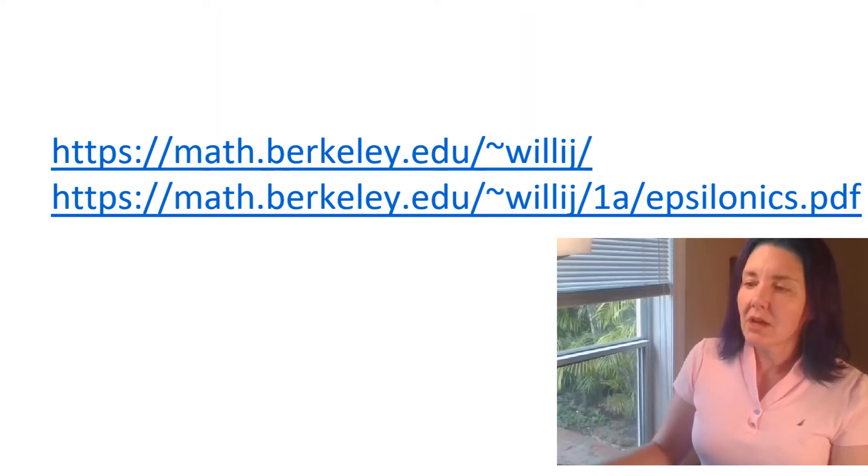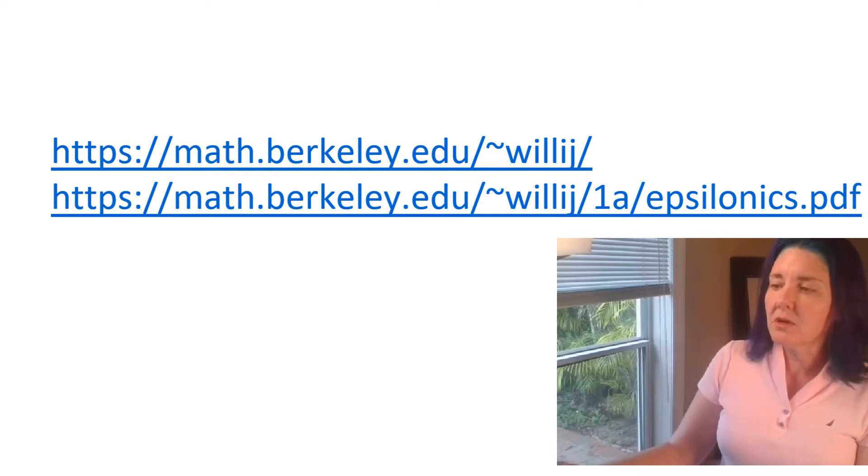He had posted a website with some tips on how to determine what delta to use, because that's really the key to a delta epsilon proof. You assume that there's some epsilon we don't know what it is, and then we say for that epsilon we prove that there's a delta that will make the definition of a limit work. So the website is math.berkeley.edu and it's linked below the video.